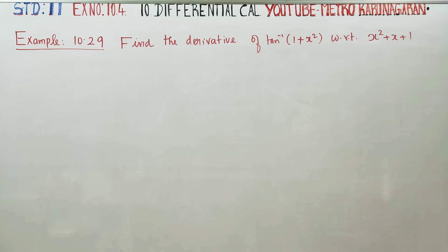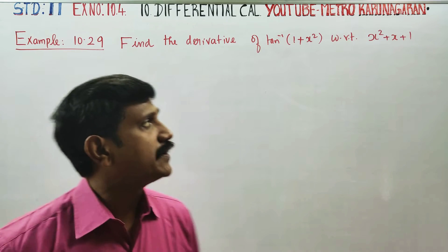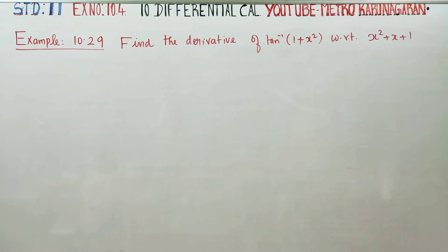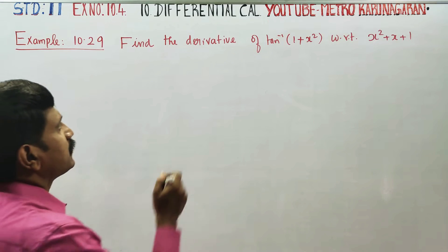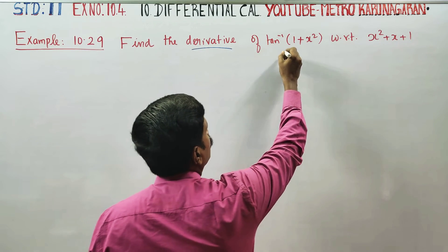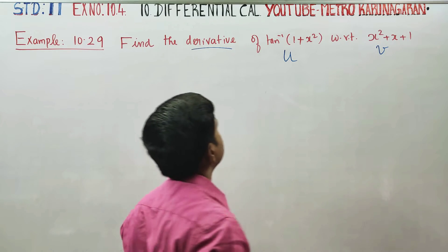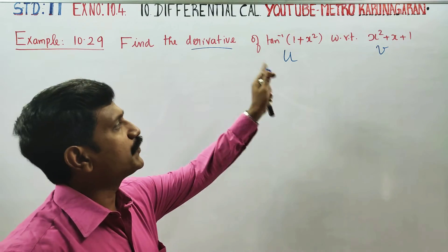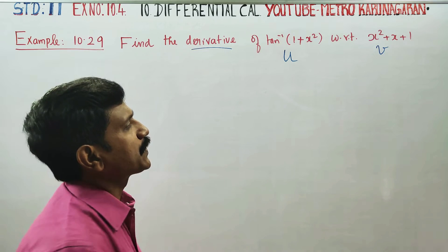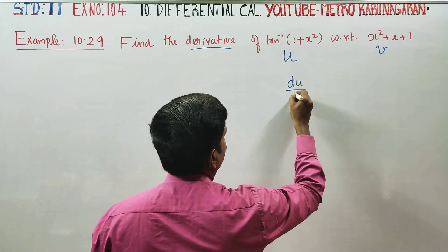Dear Learn Standard Students, in Example 10.29, find the derivative of tan inverse of 1 plus x square with respect to x square plus x plus 1. Find the derivative of u with respect to v — that means what is the meaning of du by dv?